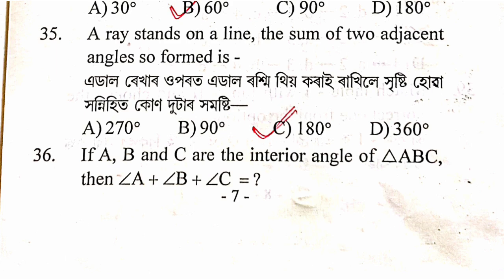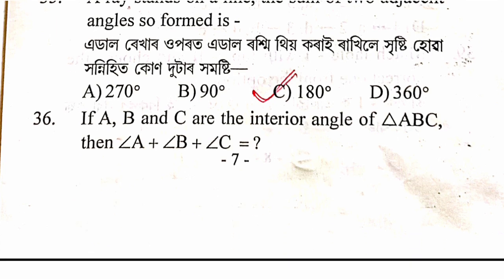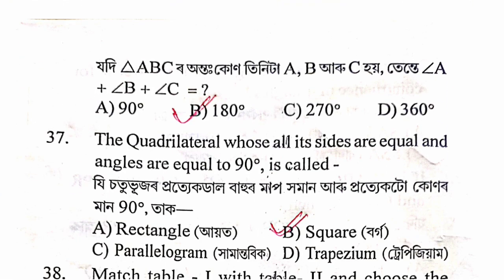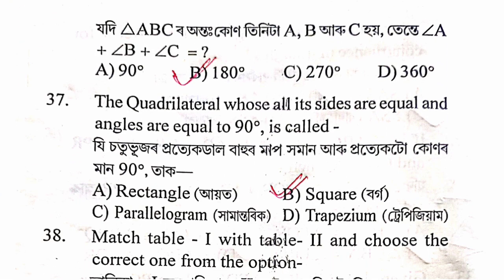Question 36: if A, B, and C are the interior angles of triangle ABC, then angle A + angle B + angle C = 180 degrees. The answer is option B.